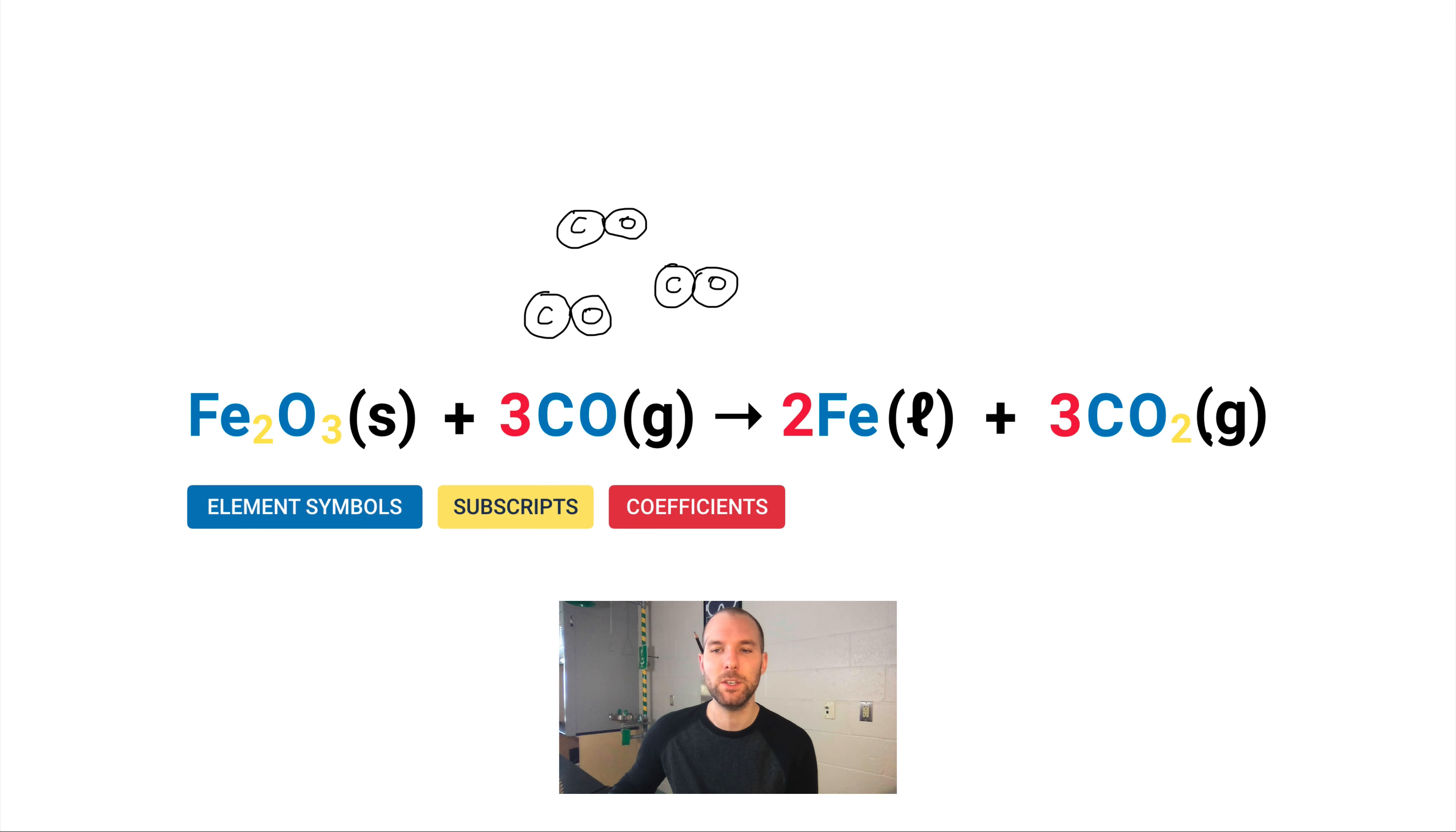How's that different from a two in CO2 with a three in front of it? Well, this here means that there's a CO2—three of these. So that's the difference between a subscript, which is a smaller number. This tells you what the formula of the substance is, and that means that all of these things are chemically bonded together.